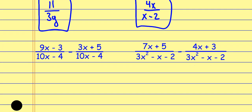This one, once again, we have the same denominator, so I subtract the numerator and the denominator stays the same. Be careful as you subtract: 9x minus 3x is 6x, negative 3 minus 5 is negative 8. And then the denominator stays the same. If you need to, change subtraction to adding the opposite — it's adding the opposite of the entire numerator — the same thing we did when we were adding and subtracting polynomials.